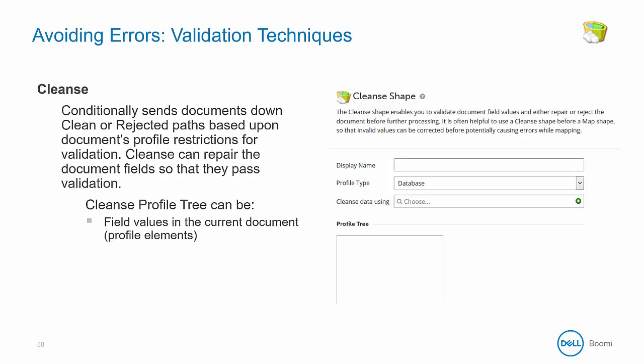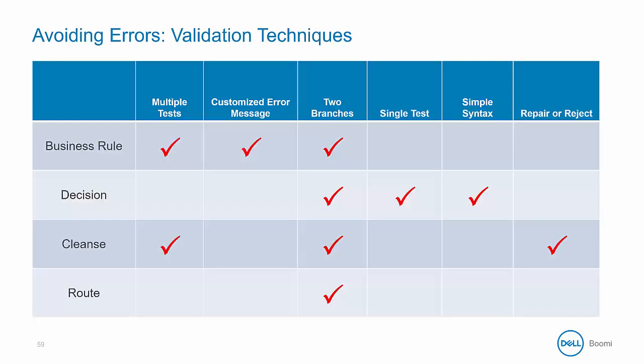The cleanse shape enables you to evaluate document field values according to profile data definitions in order to determine whether to repair or reject the document before further processing. This table provides a quick reference guide to the characteristics of the different validation options and the scenarios in which they can be useful. Multiple tests can be run with both business rules and cleanse shapes. The business rule shape alone allows for customized error messages. They all provide branching for handling comparisons, but for a single test with simple syntax, the decision shape is best. And lastly, the cleanse shape alone has the ability to repair data.